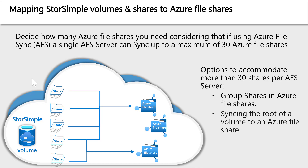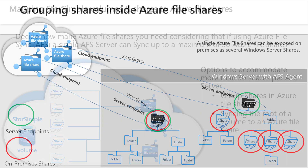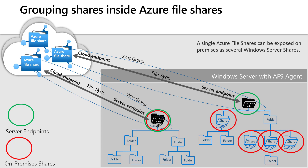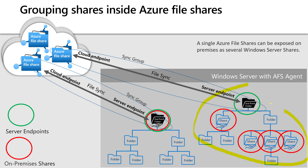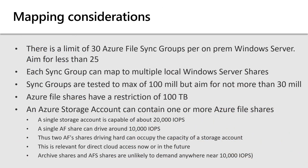If you want more than 30 on-premises file shares per server, you can group several on-premises shares into one Azure file share. An Azure Sync service sync group is defined by a cloud endpoint, which is an Azure file share, and a server endpoint, which is a folder on a Windows Server machine. On the Windows Server machine, you can share out the root of the server endpoint as an on-premises share, as shown on the left here, which gives you one on-premises share per Azure file share. Or you can share out several descendant folders underneath the server endpoint, as shown on the right here, which allows you to group many on-premises shares into an Azure file share.